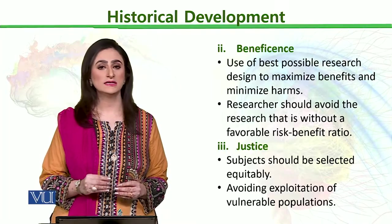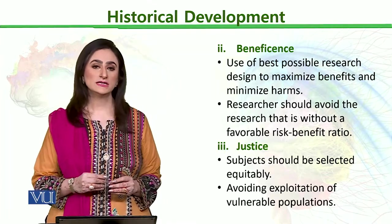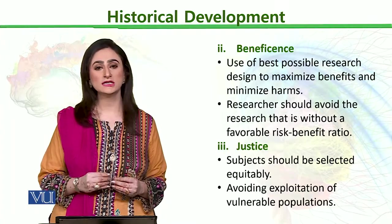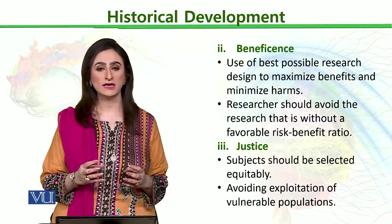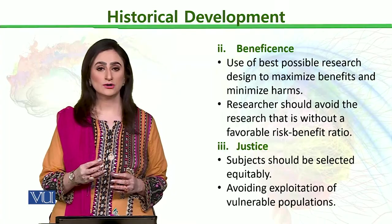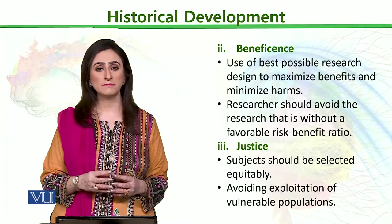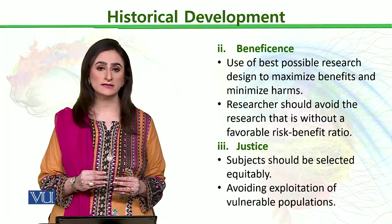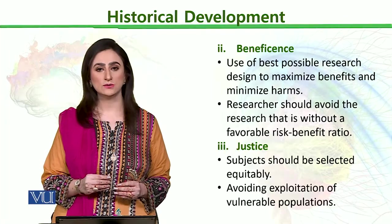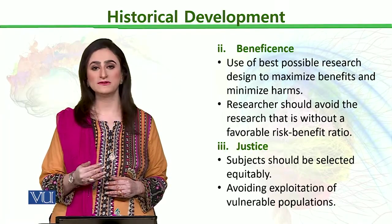Without this, we should not design any experiment. The researcher should avoid research that is without a favorable risk-benefit ratio. For example, in a depth perception study involving toddlers, a crawling baby comes to the edge of a table and stops, not wanting to go further because it senses it might fall. When experiments on depth perception were conducted without safety measures for the children, such research would be illegal. Ensuring safety measures is very important in any experiment to reduce risk and increase the benefit ratio.